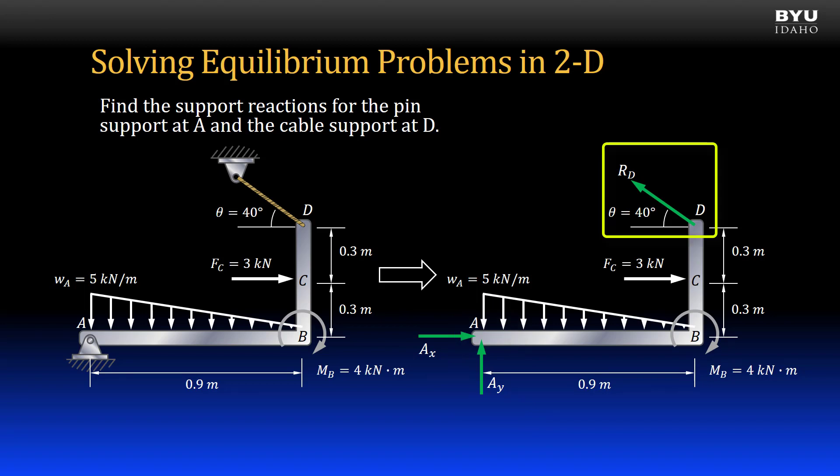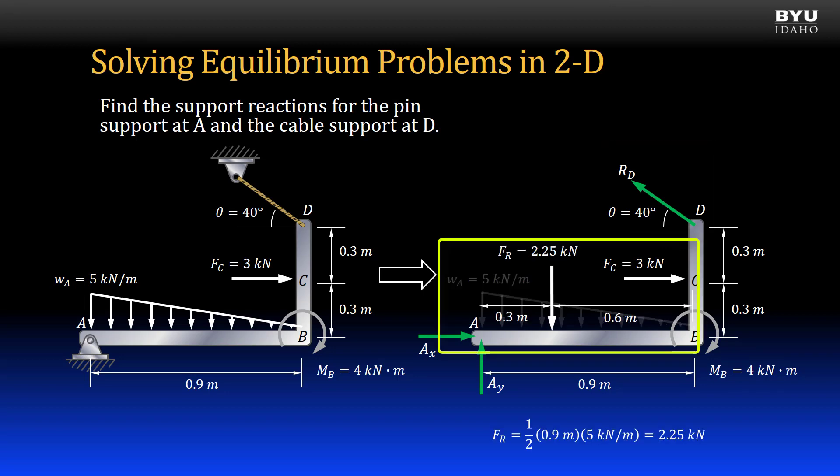The cable support at point D is replaced by a single tension force drawn in the direction of the cable. I will simplify this problem in one more step by converting the linearly distributed load to a resultant force acting at one-third the distance of element AB from point A.